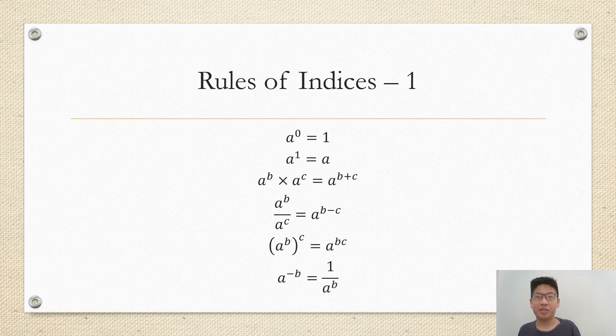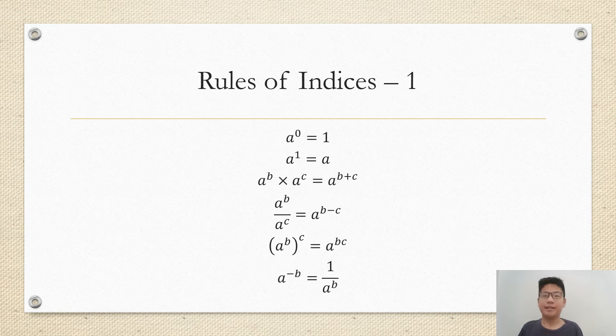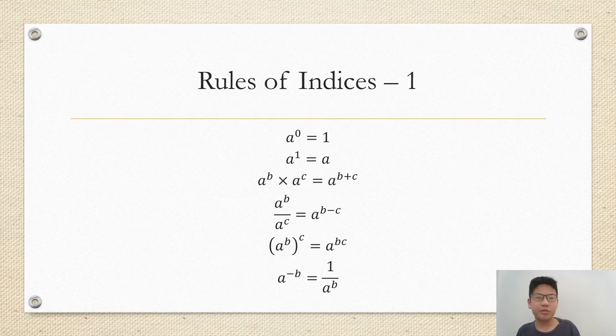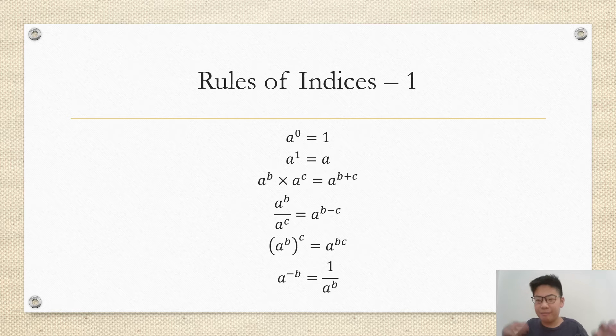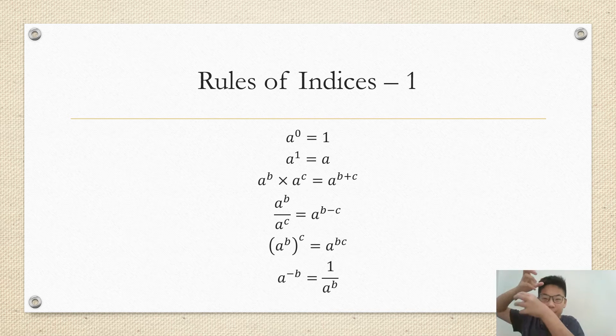A to the power of one is a because you only multiply a once. And then the rest you can derive them yourself, but I'll just tell you that a to the power of b times a to the power of c is like piling up c a's over b a's.